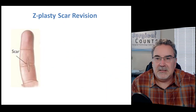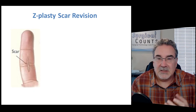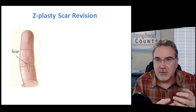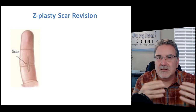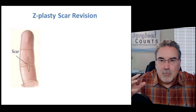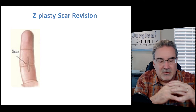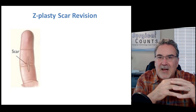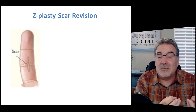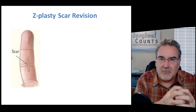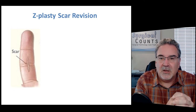A Z-plasty is a type of scar revision. Scar tissue is different from skin tissue — skin tissue is very flexible and stretches a lot. Scar tissue is just an emergency stopgap to cover the skin over and heal it, but it's very fibrous and thick, almost like fascia — a really tough material.